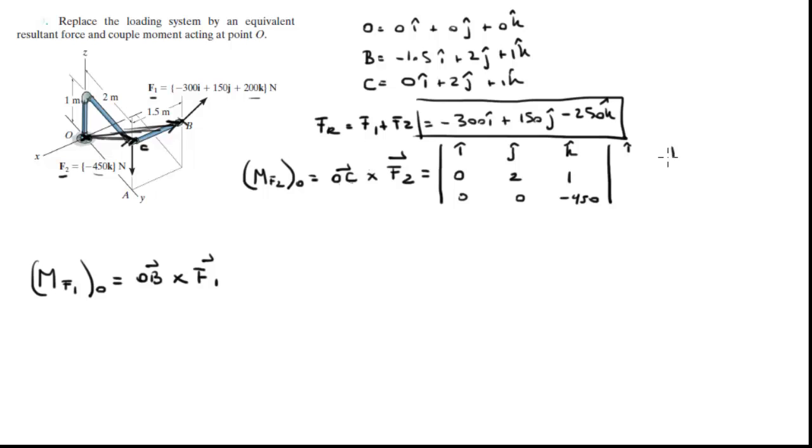So you rewrite first, second column, 0, 2, 0, 0, positive diagonals. The first one, i times 2 times negative 450 minus 100i, second one is 0, third one is 0, negative diagonals, first one is 0, second one is 0, third one is 0. So the answer is negative 900i for the first moment.